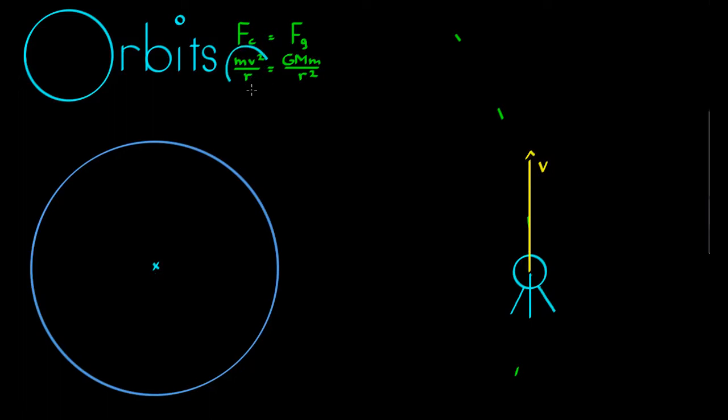Which is given by either mv squared on R, or I'll jot this one down so you remember it, 4π squared rm on t squared, but we'll use mv squared on R for now. So that's the circular motion component. It's moving at a constant velocity in a perfect circle and it obeys this formula.